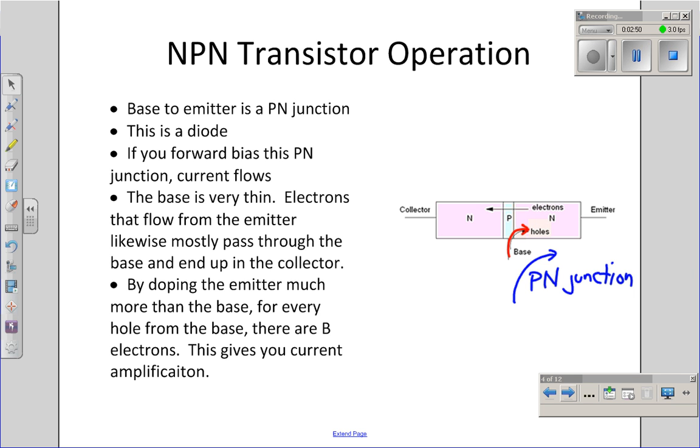If I dope the emitter, say 100 times more heavily than the base is doped, for every hole that flows, there will be 100 electrons flowing across that PN junction. Next, I make the base very thin. Likewise, any electron that flows from the emitter to the base passes straight through and winds up at the collector. The collector is also N-type material, so the electrons are majority carriers, and the electrons flow freely through the collector. The net result is that for every unit of current base to emitter, I get 100 units of current emitter to collector.